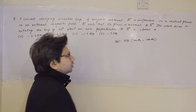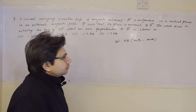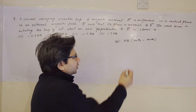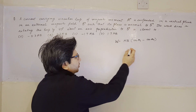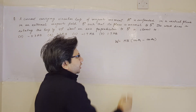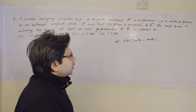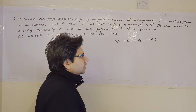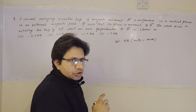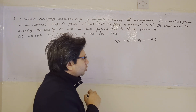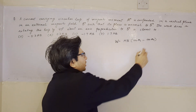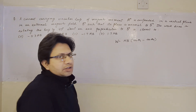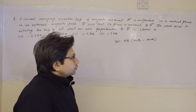In this formula, M is the magnetic moment, B is the magnetic field, θ₁ is the angle between the magnetic moment and the magnetic field in the initial position, and θ₂ is the angle between M and B in the final position.